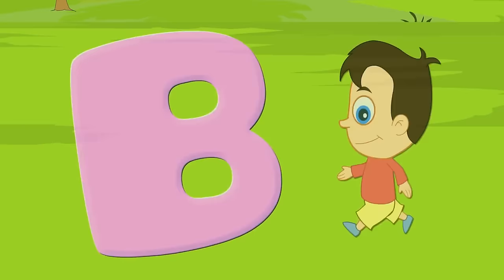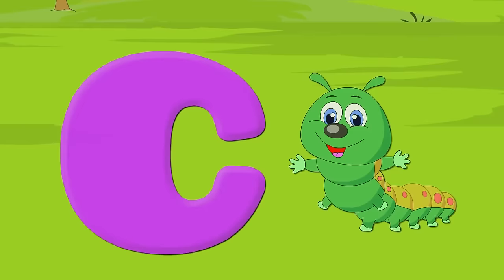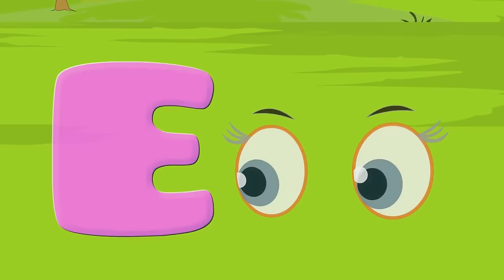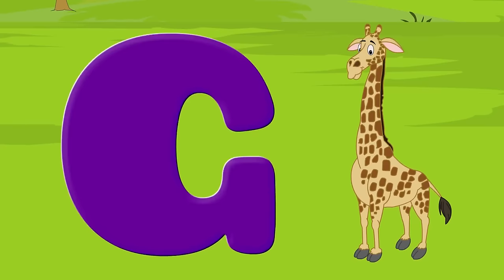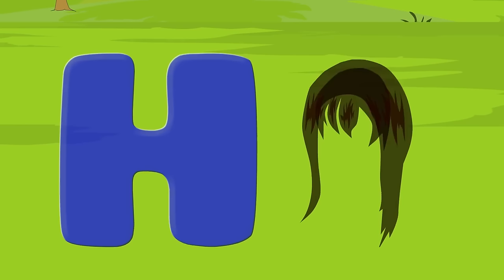A for alligator, a-a-alligator. B for boy, b-b-boy. C for caterpillar, c-c-caterpillar. D for den, d-d-d-den. E for eye, u-u-i. F for fruits, f-f-fruits. G for giraffe, g-g-giraffe. H for hair, h-h-hair.